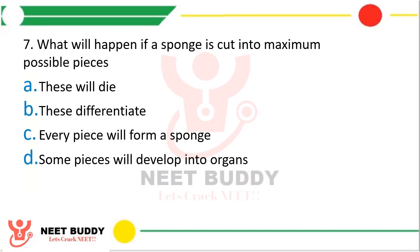Question seventeen: what will happen if a sponge is cut into maximum possible pieces? Option A, sponges will die; option B, they will differentiate; option C, every piece will form a sponge; or option D, some pieces will develop into organs? The correct answer is option C, every piece will form a sponge. Sponges have the ability to reproduce asexually by the process of fragmentation, so when cut into small fragments, each fragment will grow into an entire sponge.